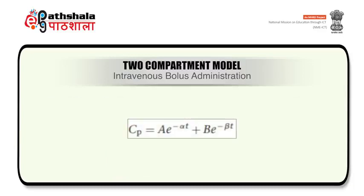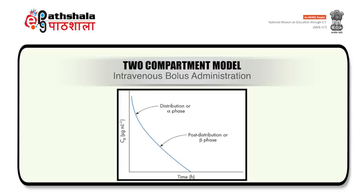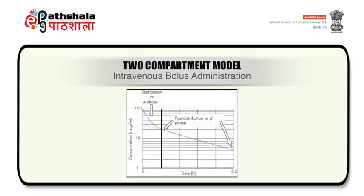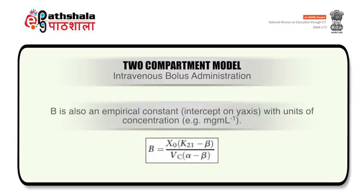The concentration in the peripheral compartment can also be expressed by a corresponding equation. Combining them gives: Cp = A·e^(−αt) + B·e^(−βt). The figure depicts the resolution used to calculate the plasma drug concentration in the central compartment at any time t. The first term A·e^(−αt) is the distributive phase and B·e^(−βt) is the elimination phase. On plotting concentration in micrograms per mL versus time, the initial phase represents the alpha phase and the later phase shows the beta phase. The constant A can be calculated by a multi-exponential equation; B is an empirical constant representing the y-axis intercept with units of concentration in milligrams per mL.